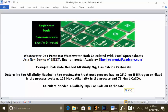Today's problem reads: determine the alkalinity needed in the wastewater treatment process, having 25 milligrams nitrogen oxidized in the process system, 125 milligrams per liter alkalinity in the process, and 75 milligrams per liter calcium carbonate. Calculate needed alkalinity milligrams per liter as calcium carbonate.